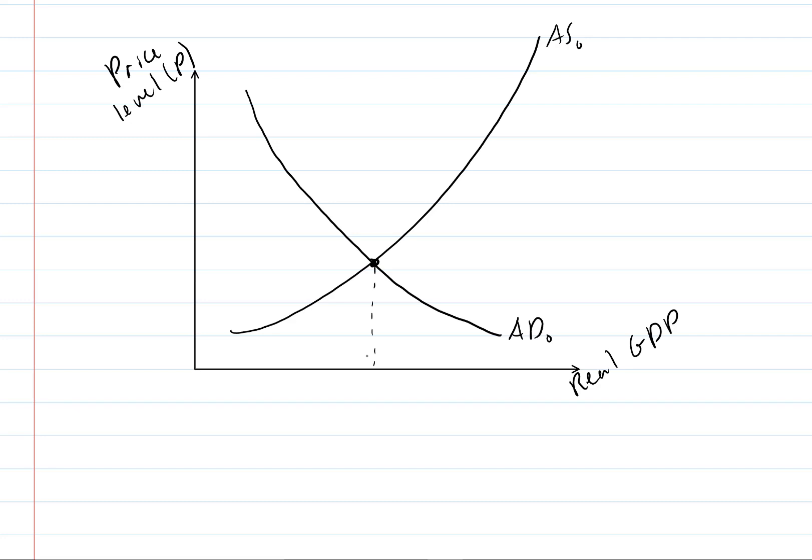If we go down to our real GDP axis, this is going to be our Y0, our equilibrium real GDP. And then if we go over to our y-axis, we have P0 which is going to be our equilibrium price level.